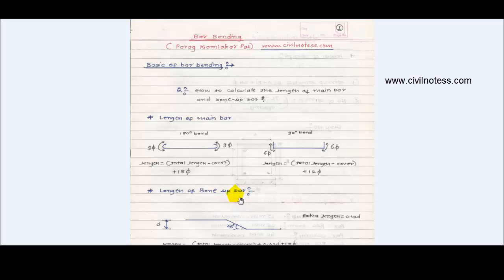Basic concepts are always important for solving many numericals. For solving bar bending, it is important to determine the length of main bars, the length of bent up bars, and the length of stirrups. Here are the formulas which are important to calculate the length of main bar.